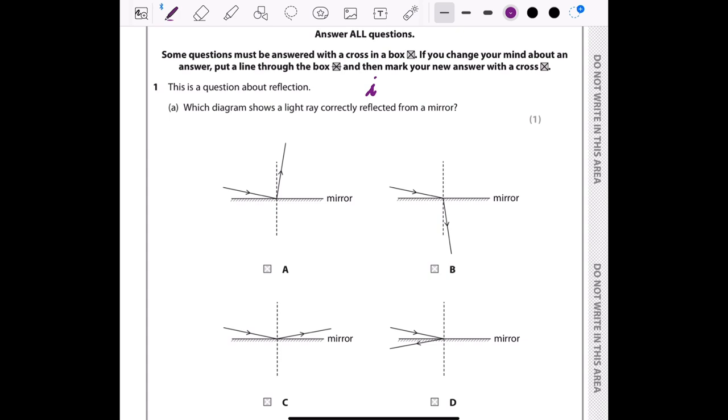The law of reflection states that i equals r: angle of incidence equals the angle of reflection. To identify which diagram is the correct one, we have to look at the angle of incidence and angle of reflection.